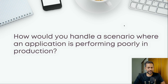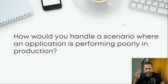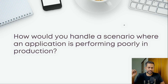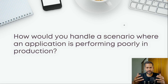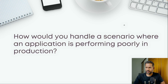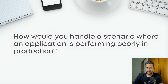The next question is: how would you handle a scenario where an application is performing poorly in production? This is one of the most consistently asked DevOps questions — I've seen it since 2013-14 and even on the DevOps Pro exam. It tests whether you have real experience and experience handling production applications. If you have a background in system administration or production support, you've likely dealt with JVM issues, memory issues, or CPU issues — these are common scenarios.